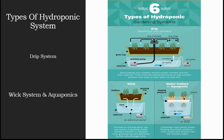A recovery system can have large shifts in pH and nutrient strength levels that require periodic checking and adjusting. Next comes the wick system. The wick system is by far the simplest type of hydroponic system. It is a passive system, which means there are no moving parts. The nutrient solution is drawn into the growth medium from the reservoir with a wick.